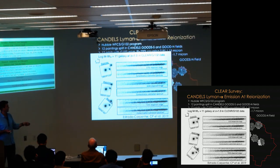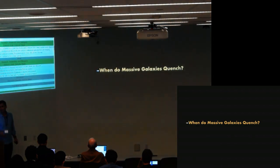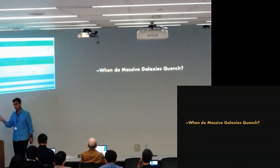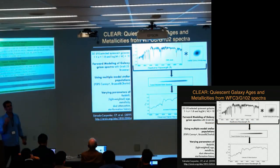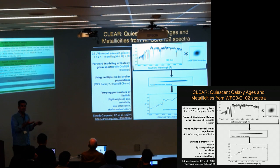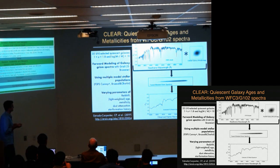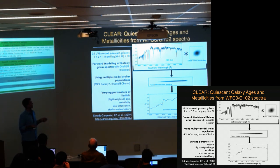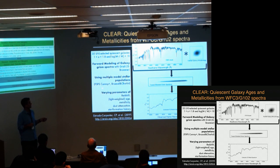I want to use these data to get at the first question: when do massive galaxies quench, and how does this process go? To do this, we take a stellar population fitting method starting with a sample of quiescent galaxies in a high-redshift range — UVJ selected. We forward model their GRISM spectra, starting with a high-resolution spectral synthesis model for collective stars. We've tested both Charlie Conroy's FSPS models and Bruzual-Charlot models — we favor the latter for this particular data set.